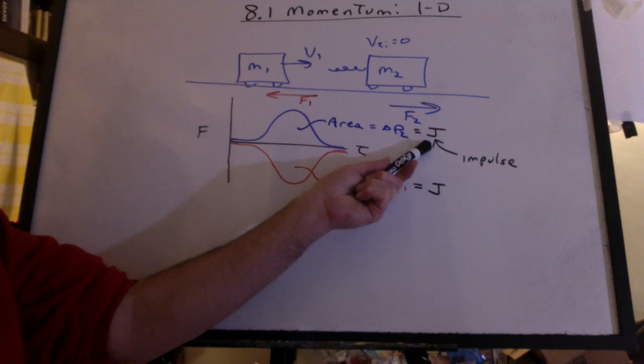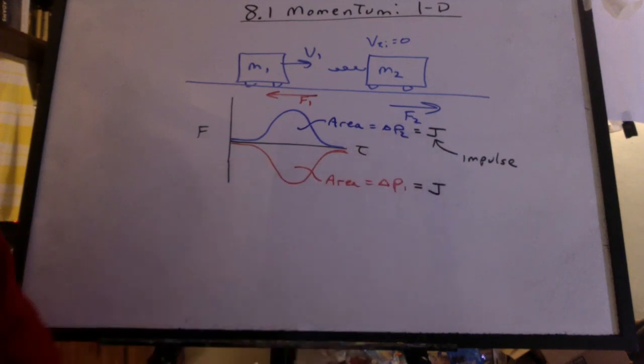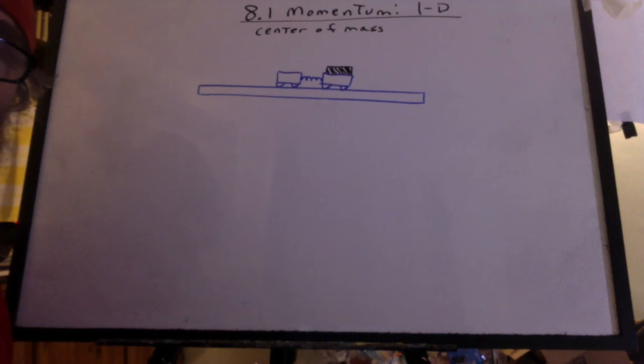And that change in momentum is known as the impulse. We use a capital letter J to represent that. Yeah, I know. It makes perfect sense, doesn't it? Okay, one more thing to go over.